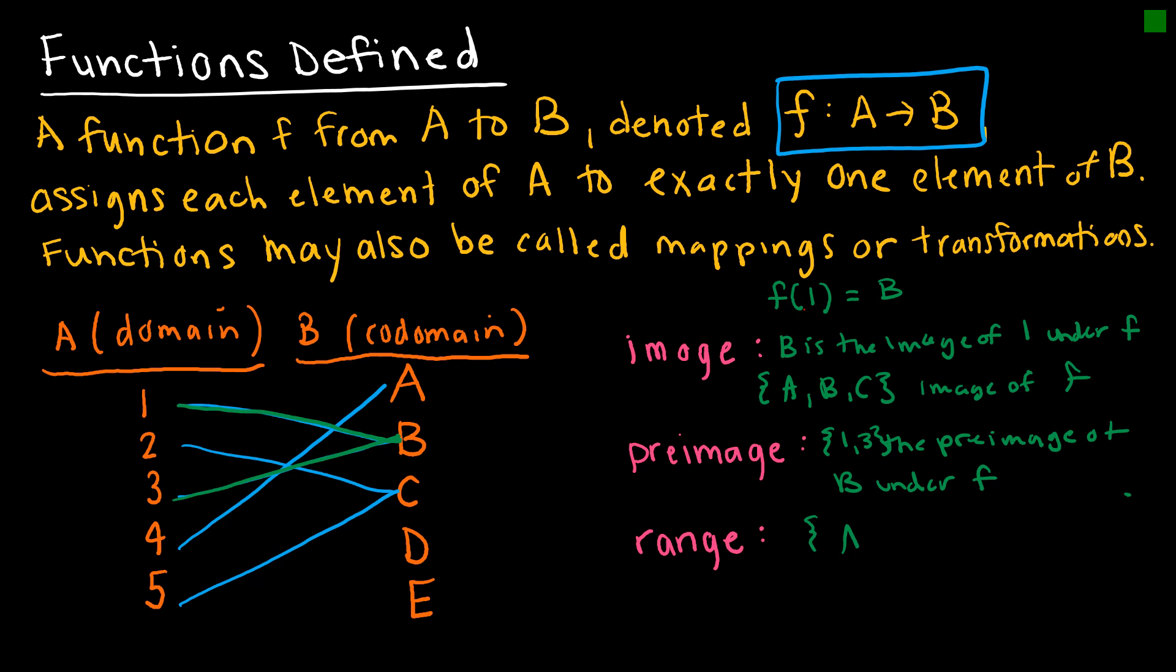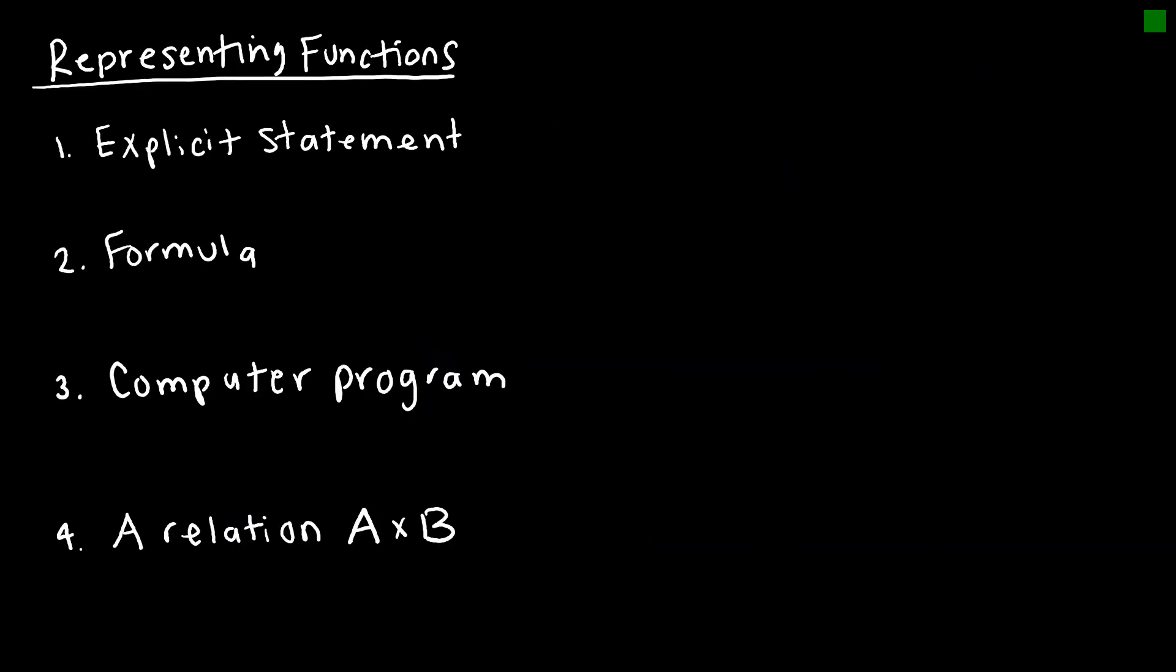So the range is the set of all images, the outputs that are mapped to from the first set. So in this case, the range would be those values A, B, and C, because these are all values that were mapped to from the domain of A. We might see functions represented in different ways throughout our study. One is as an explicit statement. An explicit statement just means that we are going to be told exactly which elements map to exactly which other elements in the codomain.